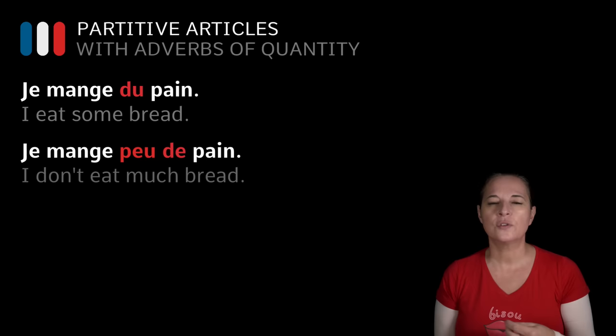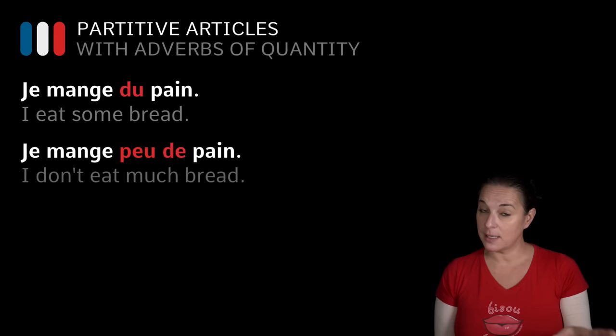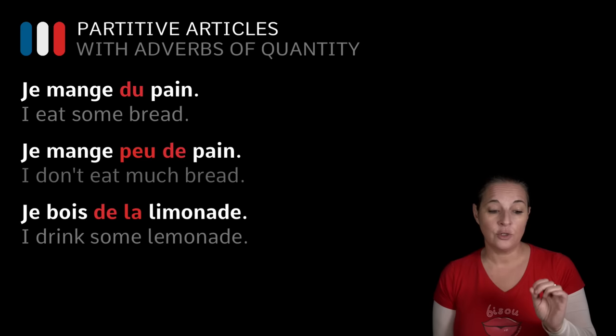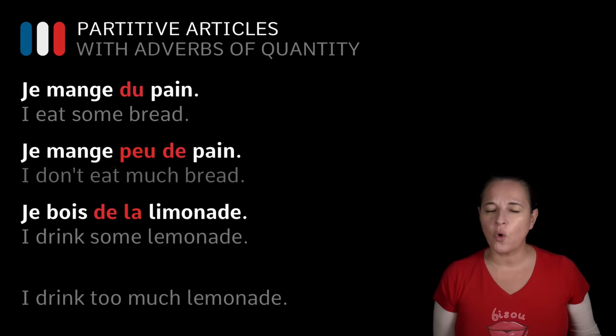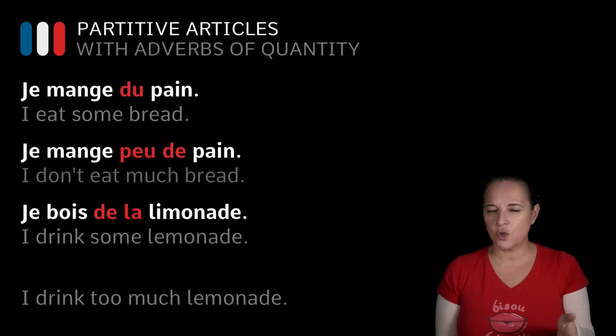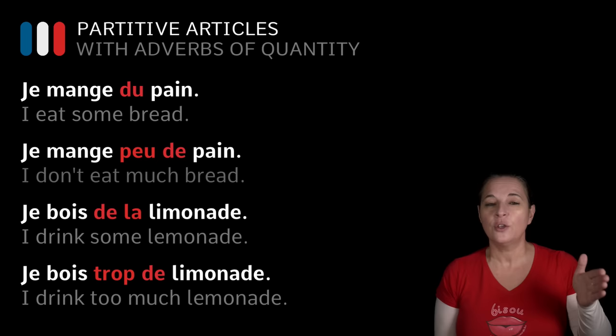Let's have a look at the same example as before: 'Je bois DE LA limonade' — I drink lemonade. DE LA because it's feminine. But if you want to say I drink too much lemonade, we use the adverb TROP, which means too much. So: 'Je bois TROP DE limonade.' Well done.